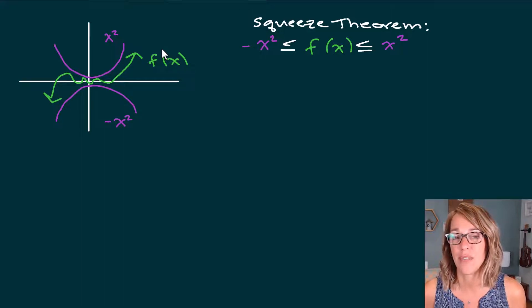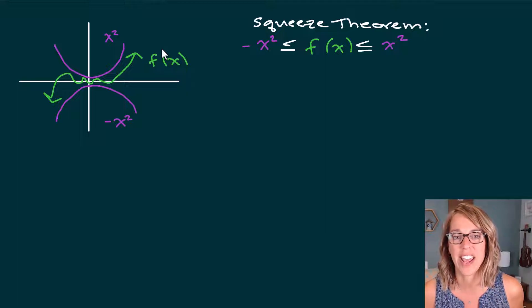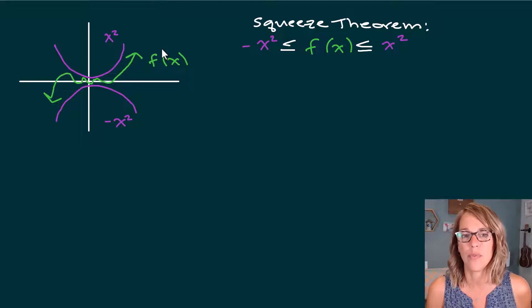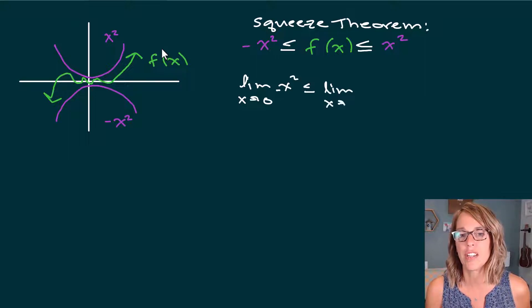We're going to take a look at the squeeze theorem with several different examples. I want to go through what it means first. I've got this function that oscillates and it's sandwiched in between the functions x squared and negative x squared. If I apply a limit now going all the way through this statement, that means I have the limit as x approaches zero of negative x squared less than or equal to the limit of the function in the middle, less than or equal to the limit as x approaches zero of x squared.